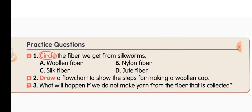Now open your content book and put today's date. Read the practice questions. First question: circle the fiber we get from silk. The options are: a) woolen fiber, b) nylon fiber, c) silk fiber, d) jute fiber. You circle option c — silk fiber.